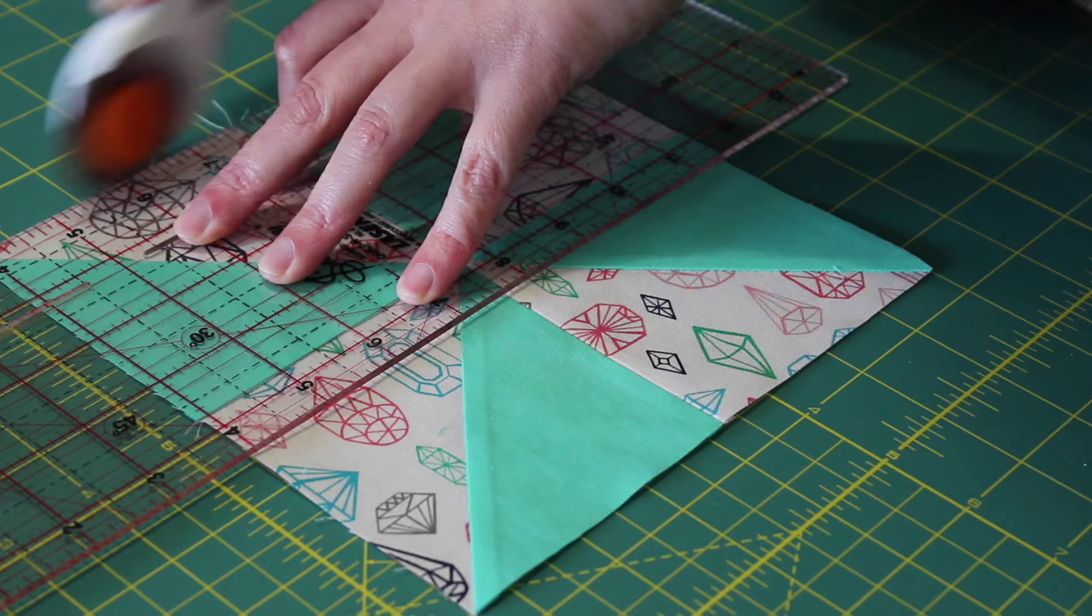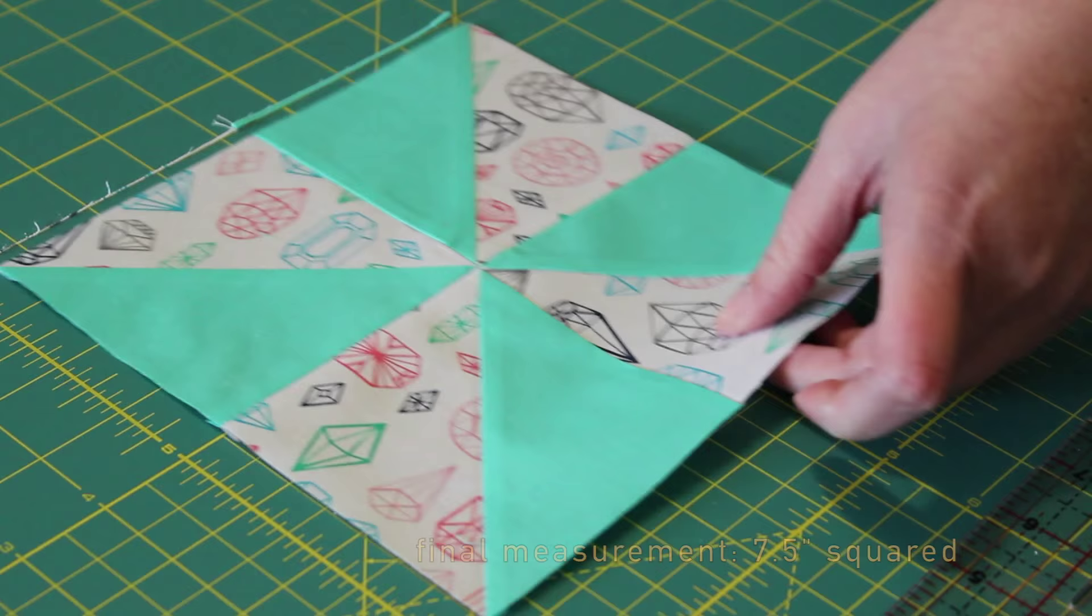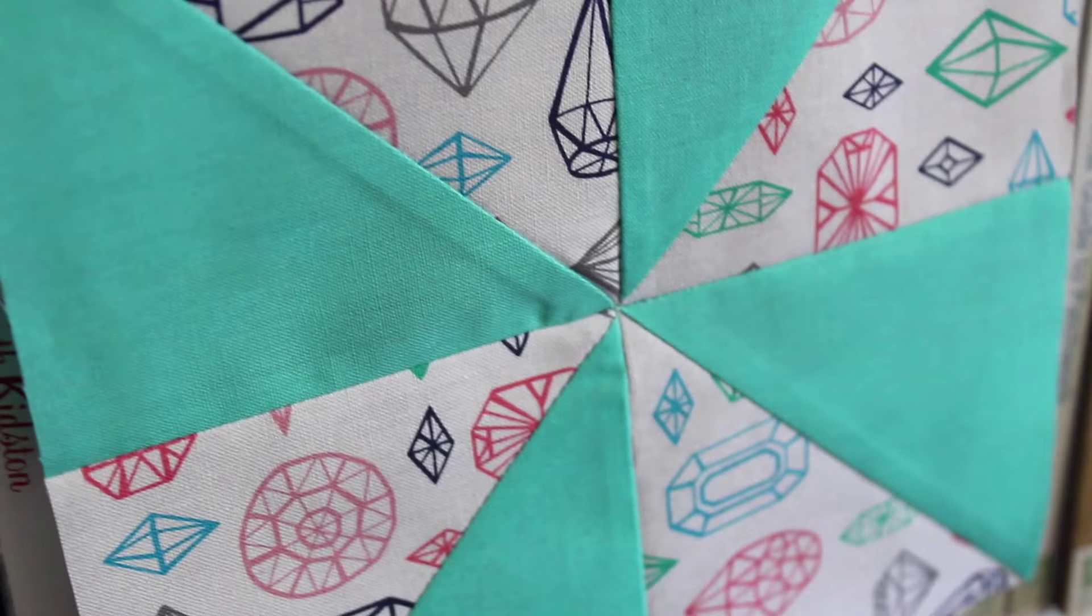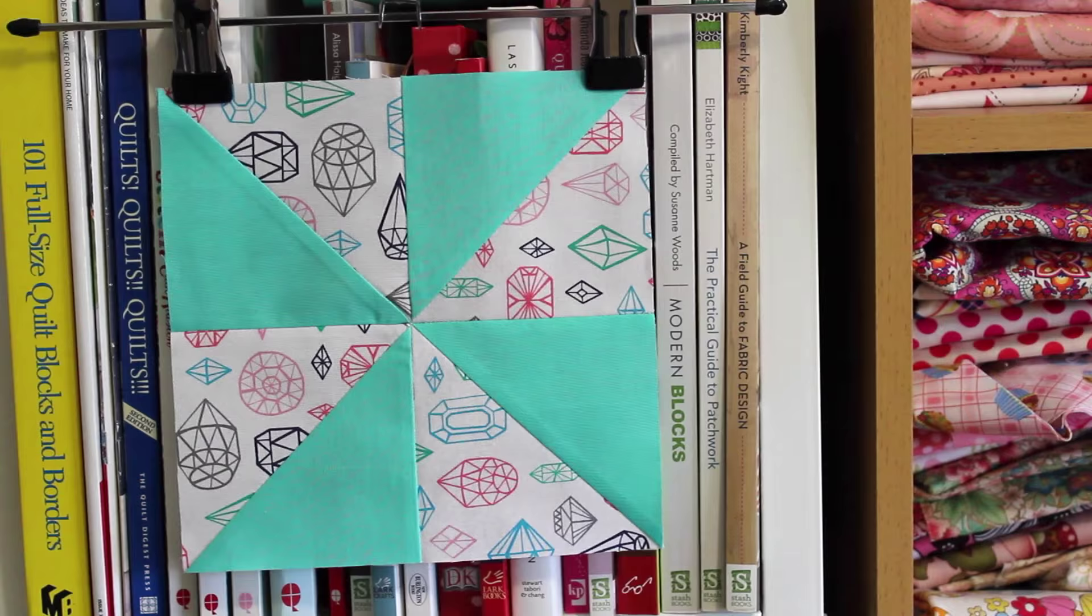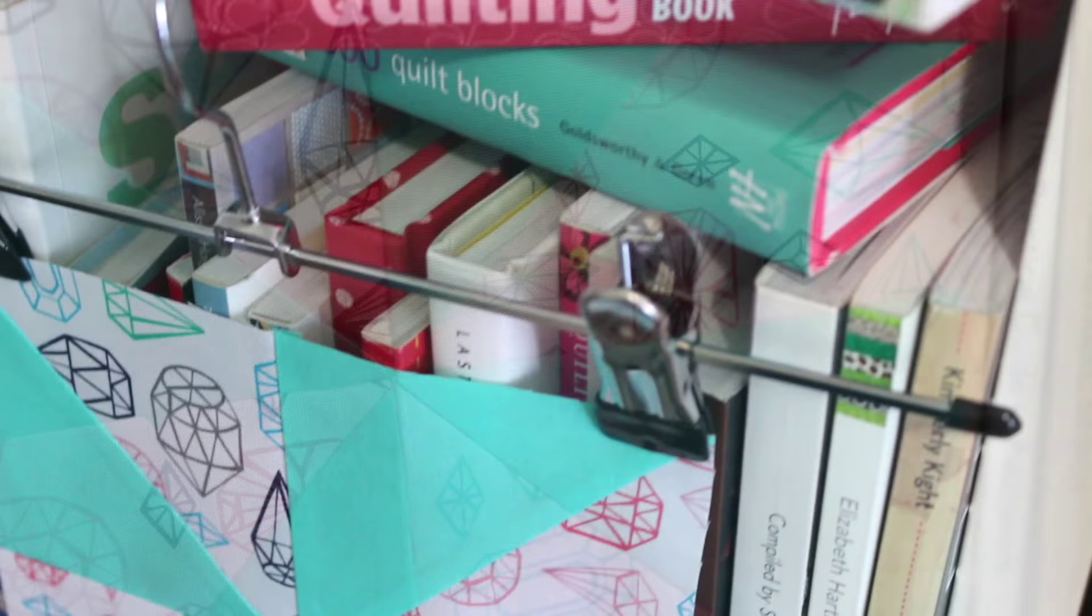Lastly, square up the block so that its final measurement is seven and a half inches squared.